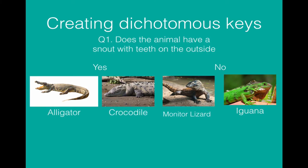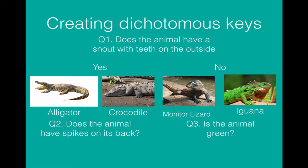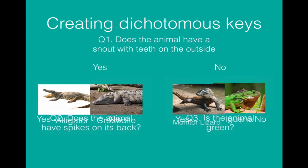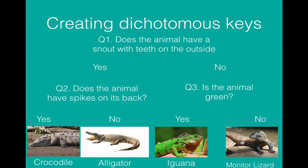Now we need something which splits the alligator and the crocodile and splits the monitor lizard and the iguana. The crocodile has spikes on its back. The alligator doesn't. So that would separate them out. The iguana is green but the monitor lizard isn't. So that would separate them out.